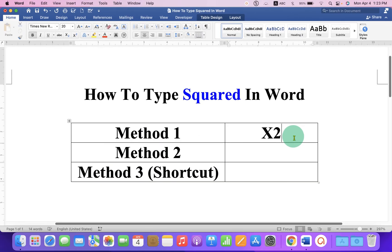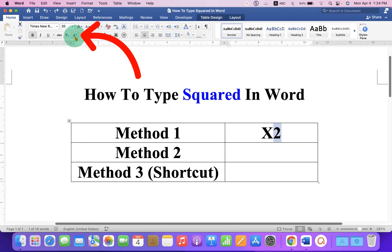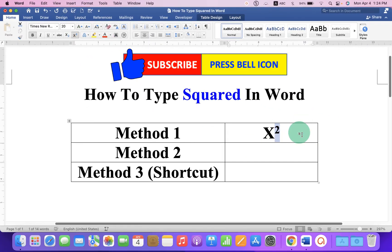First, type whatever you want, then select the number 2 by pressing Shift and the back arrow key. Now click on the superscript option and you will get the 2 as a superscript.